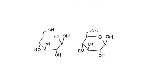In this video we'll be looking at the beta-glucose polysaccharide, which is cellulose. On the screen you can see two beta-glucose molecules. You can tell they are beta-glucose because the hydroxyl group on carbon number one is above the ring — whereas in alpha-glucose the hydroxyl group would be below the ring on carbon number one. So both of these are beta-glucose molecules.